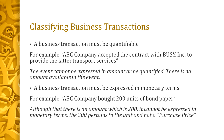A business transaction must also be expressed in monetary terms. For example, ABC Company bought 200 units of bond paper. Although there is a number — 200 — it cannot be expressed in monetary terms because 200 pertains to the units and not a purchase price. Therefore, only the purchase price can be recorded in the accounting book.